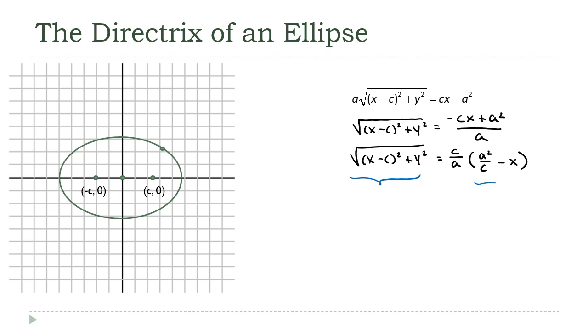This distance over here is the distance from that same point to the line, x equals a² over c, and that line is the directrix. So if we take a look at my equation over here,